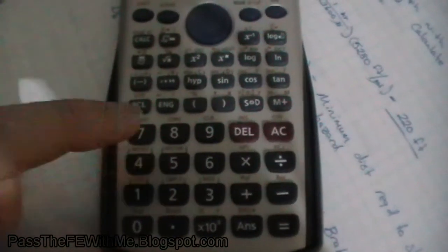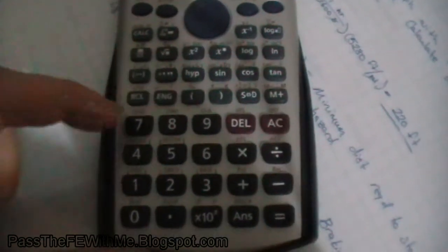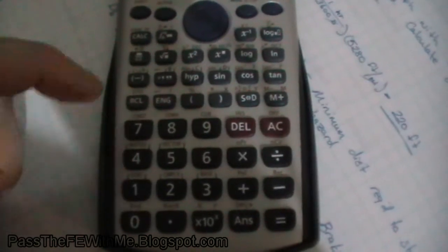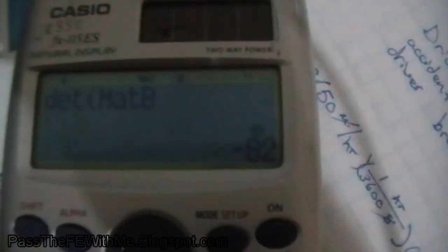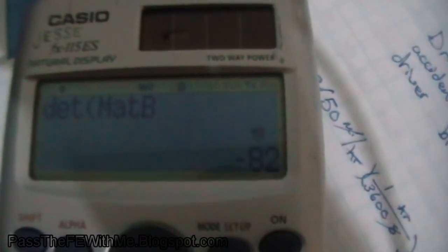Then shift 4, and we're talking about matrix B. So we'll press that. Hit the equal button, and you get the answer. Your determinant of matrix B is negative 82.